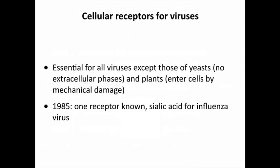Cell receptors are needed for all viruses that infect mammals and most other animals, except for viruses that infect yeasts. Some yeast viruses don't have extracellular phases — they replicate inside the yeast, and when the yeast divide they go from cell to cell, so they don't need to worry about getting into a new cell. Plant viruses don't bind to receptors either — there are no receptors in the plant cell wall. These viruses get into the cell by damage: a vector such as an aphid, or mechanical damage like tractors breaking leaves. With those exceptions, all viruses need receptors to get into cells.